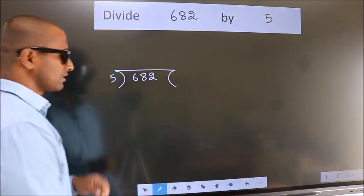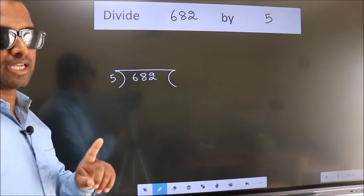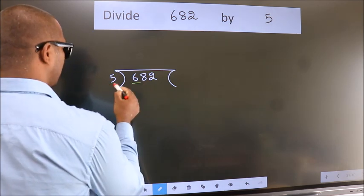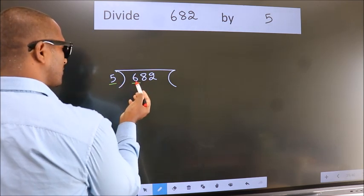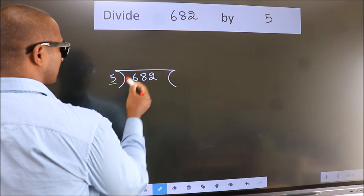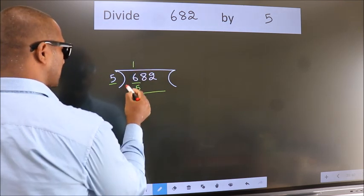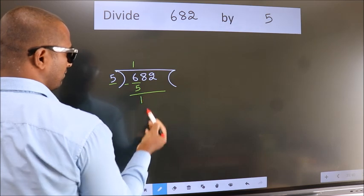This is your step 1. Next, here we have 6, here 5. A number close to 6 in the 5 table is 5 times 1 is 5. Now we subtract and get 1.